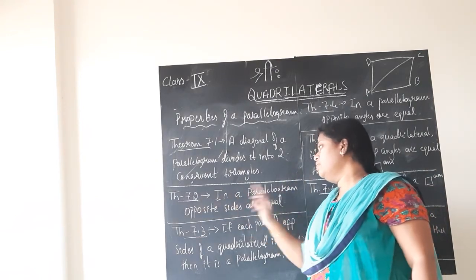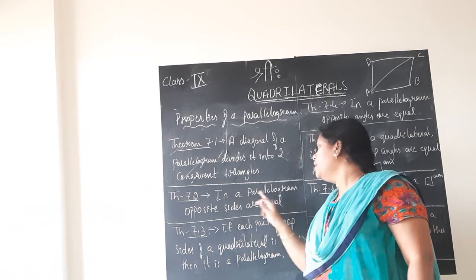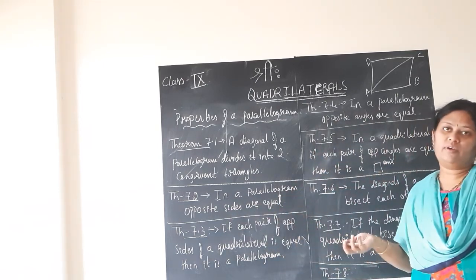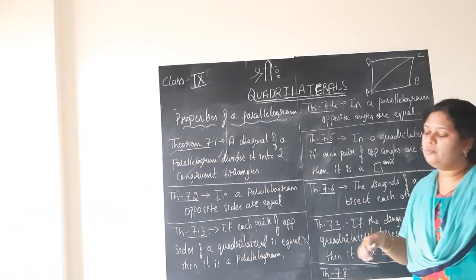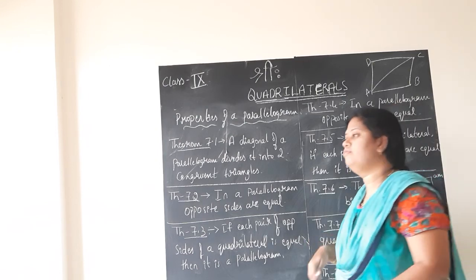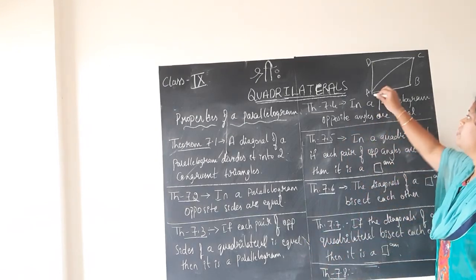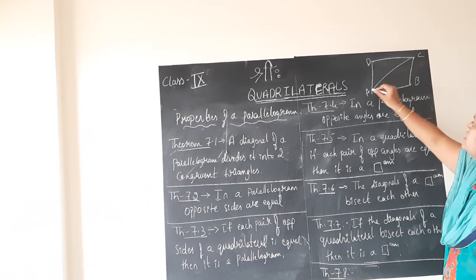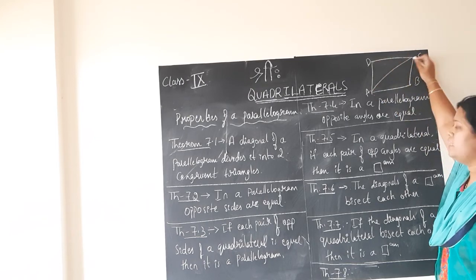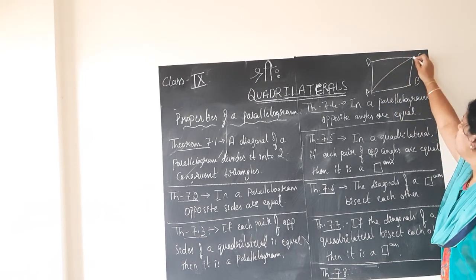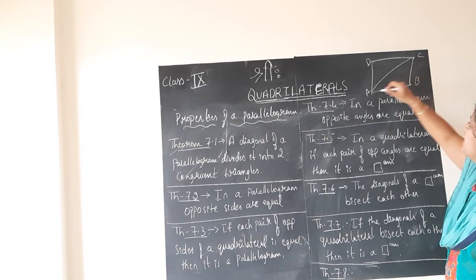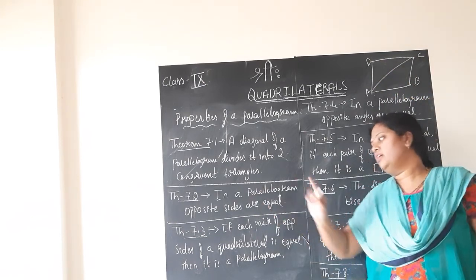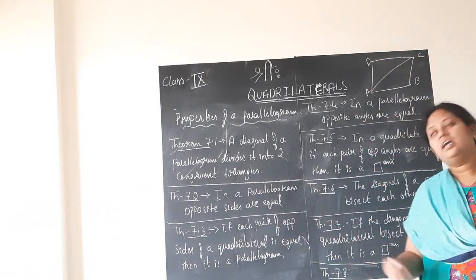Theorem 7.2 states that in a parallelogram, opposite sides are equal. Yes, of course, we studied this under the properties of parallelogram. Opposite sides are equal — AB and CD are opposite sides, BC and AD are opposite sides. So opposite sides of a parallelogram are equal.